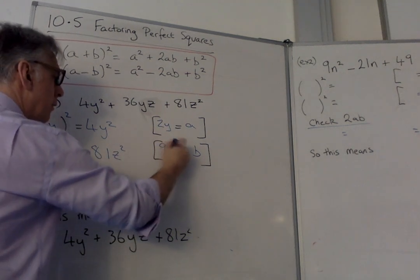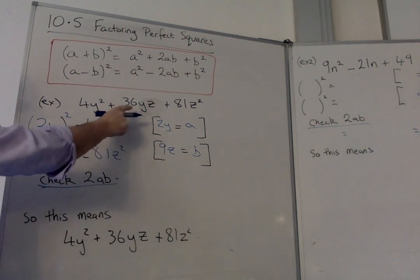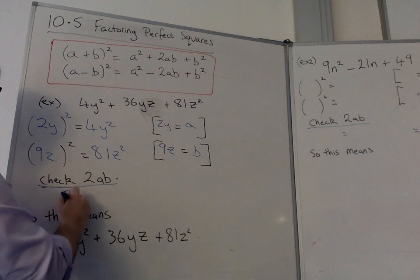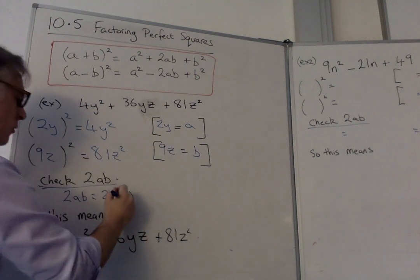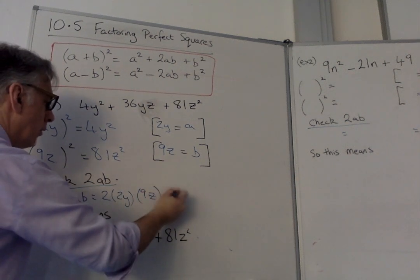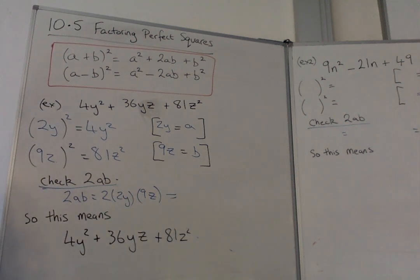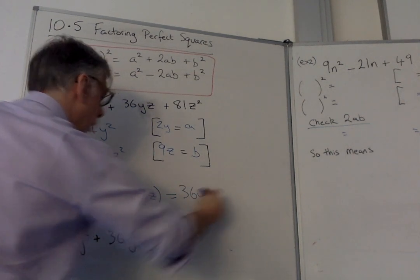So 9z is the b part. Now we need to check the 2ab, the central part, if that's matching. So 2ab is 2 times the a value, which is 2y, times the b value, which is 9z. So you can try and do that in your head. And what do you notice? It equals 36yz.